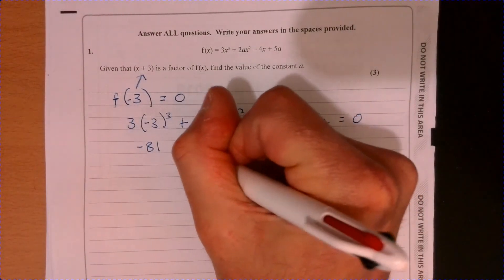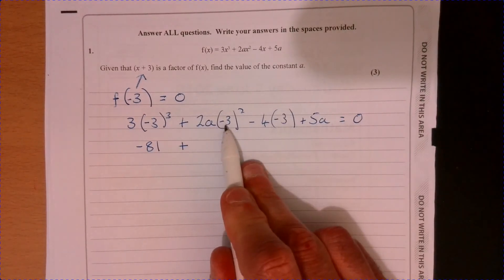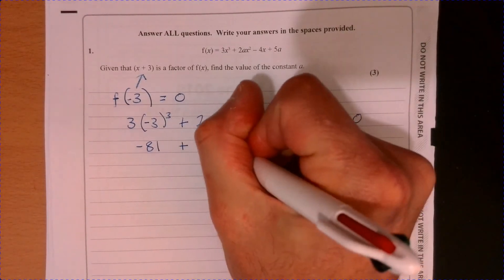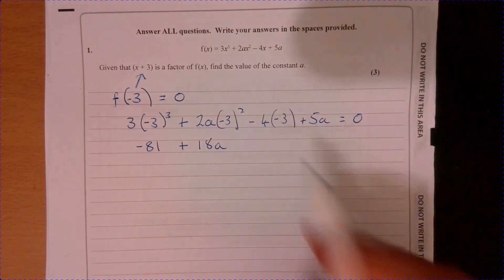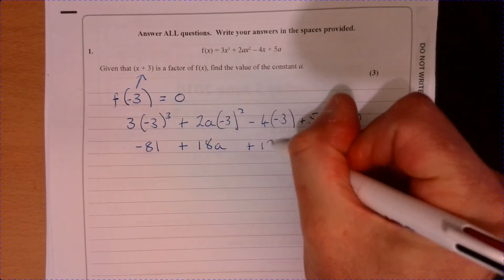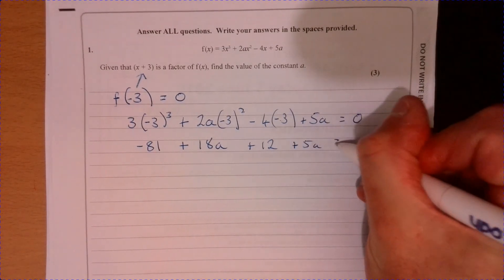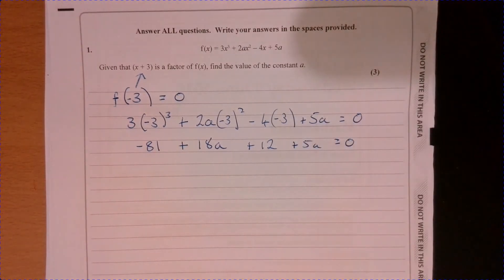And then what's going to happen here? That's going to be 9 times 2. So that's going to be 18a plus 12 and plus 5a. And that lot has got to equal 0.